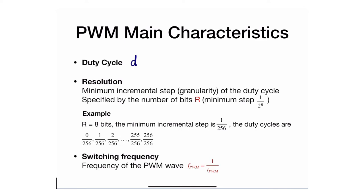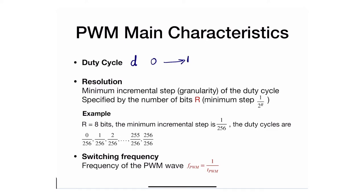The second property or characteristic of a pulse-width modulation signal is actually the resolution. The duty cycle D goes from 0 all the way to 100%, or 1, and any number in between. Because it is a real number, we have an infinite number of possibilities for duty cycle. However, we're about to design a digital system, and in digital systems we can't have an infinite number of values. The number of possibilities between 0 and 1 is defined by what we call the resolution.